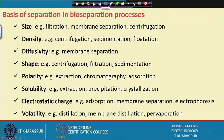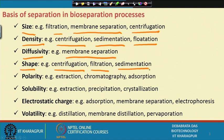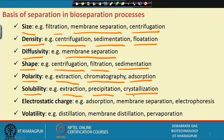Downstream processing also varies based on different physical parameters. With respect to size: filtration, membrane separation, and centrifugation. With respect to density: centrifugation, sedimentation, and flotation. With respect to diffusivity: membrane separation. With respect to shape: centrifugation, filtration, and sedimentation. Polarity involves extraction, chromatography, and adsorption. Solubility involves extraction, precipitation, and crystallization. Electrostatic charge involves adsorption, membrane separation, and electrophoresis. Volatility involves distillation, membrane distillation, and pervaporation.